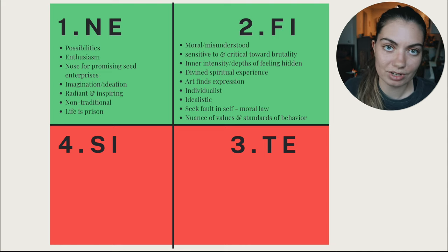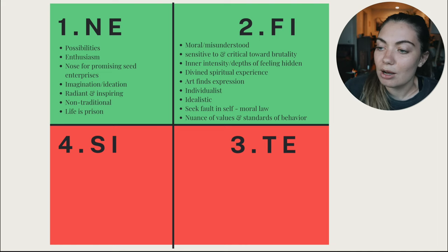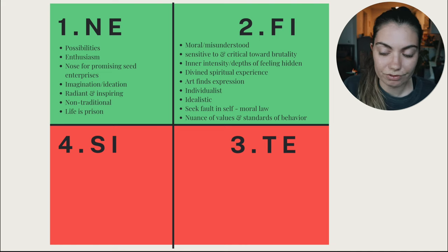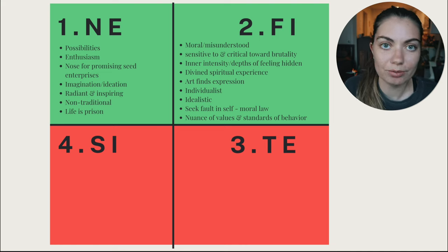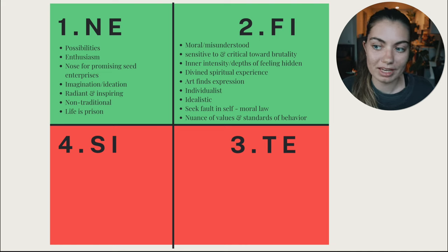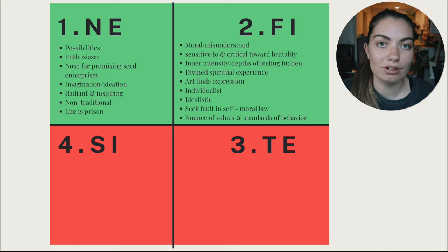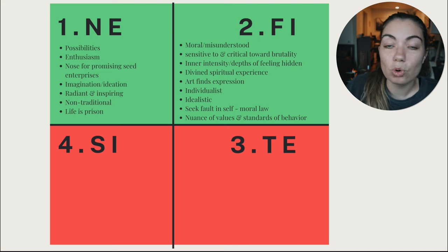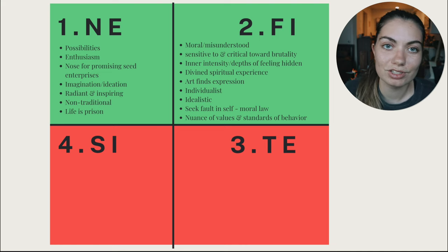Now for introverted feeling, the ENFP's second function. Everyone's second function tends to be an underused strength — it's neglected but adds complexity and two-dimensionality to the type. It tends to be neglected because it's introverted and ENFPs really enjoy extroversion, so this introverted function can feel uncomfortable. But we need both self and world, and this function gives capacity for reflection and access to knowing yourself. The number one word for introverted feeling is moral.